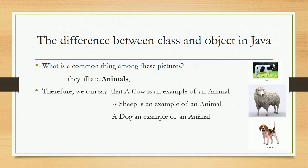Or in other words, we can say that a cow is an instance of an animal, a sheep is an instance of an animal, or a dog is an instance of an animal. Each has its own states and behavior.